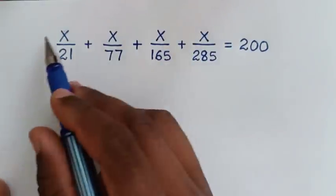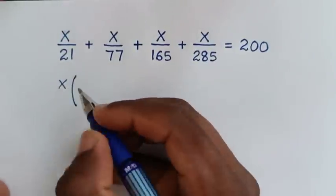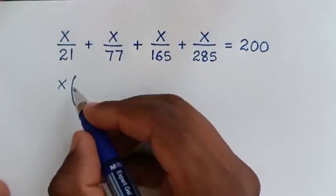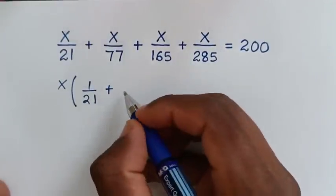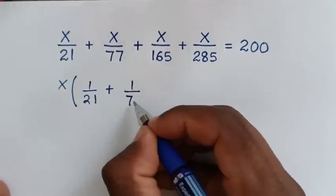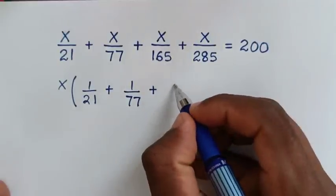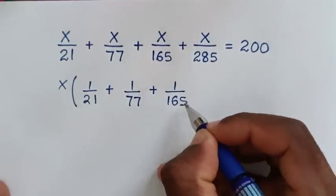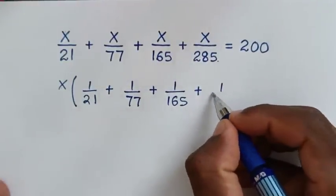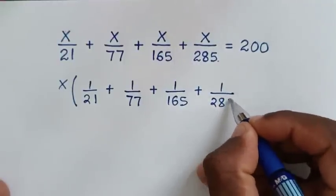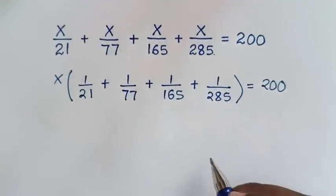In the first step, on the left side x is common, so we take x out of the bracket. Then x over 21 divided by x is 1 over 21, plus x over 77 divided by x is 1 over 77, plus x over 165 divided by x is 1 over 165, plus x over 285 divided by x is 1 over 285, in bracket, equals 200.